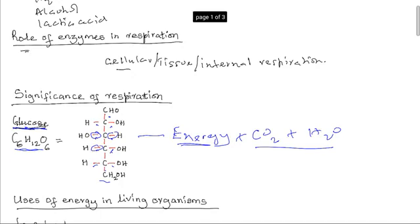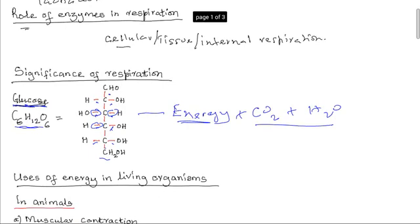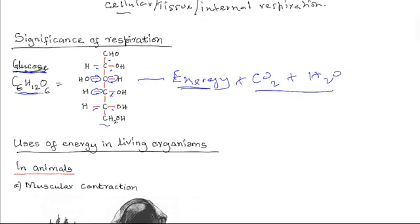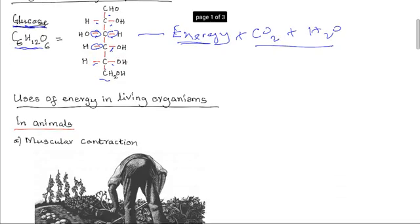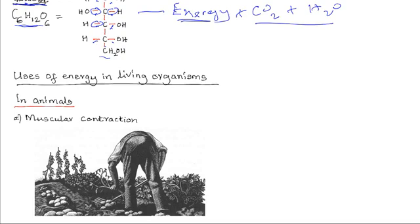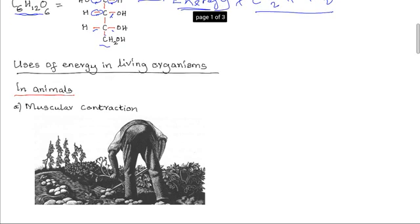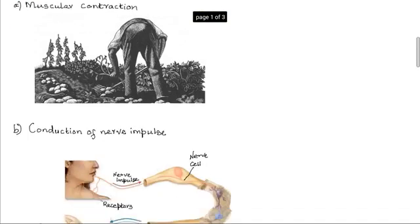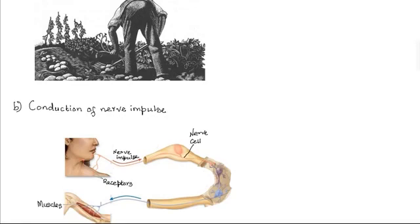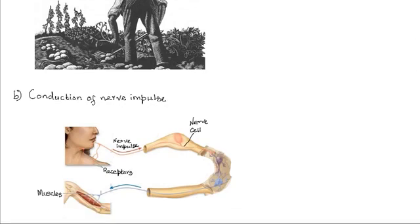Once energy is released, it is put to various uses in living organisms. In animals, the energy is used in muscular contraction that produces movement. These movements enable human beings to do work, like working in the field, planting, harvesting, and so on. All sorts of work require muscular contraction, which uses energy from respiration. Another use is the conduction of nerve impulses — communication within the body from one part to another is in the form of impulses.